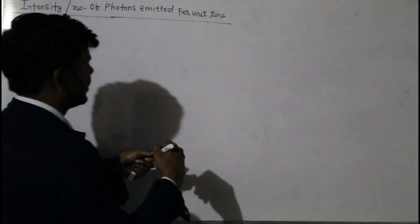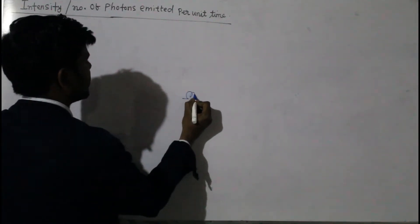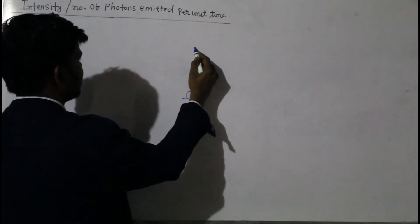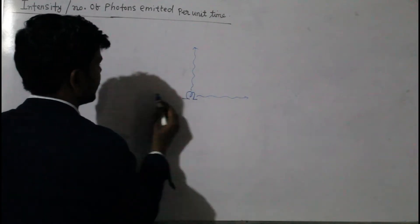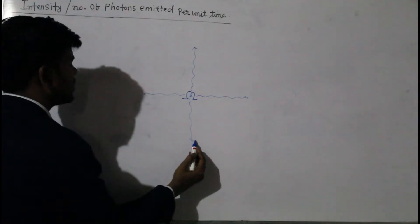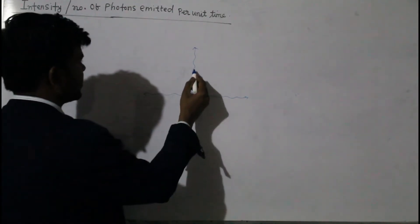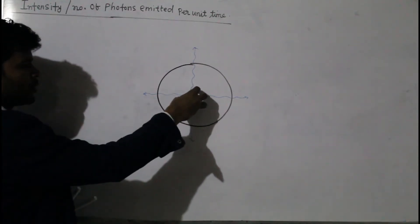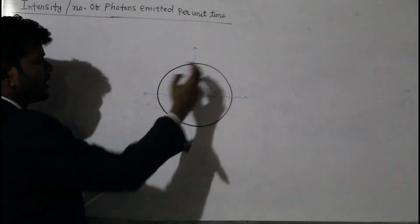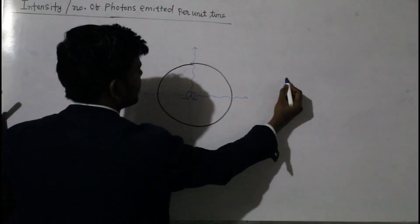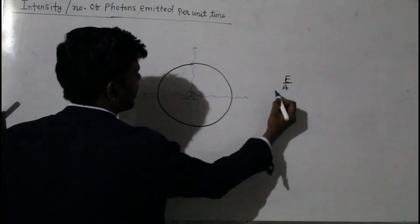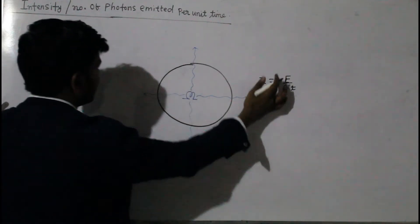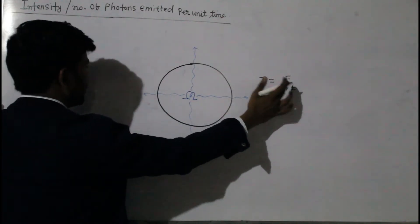Suppose we have a source of electromagnetic radiations emitting in all possible directions. We can construct one spherical surface around it. Electromagnetic radiations come out from this source and are incident on this spherical surface. Suppose the total energy incident on this surface is E, the total surface area is A, and the total time for which the energy is incident is T. Then the intensity I is defined as E divided by A divided by T — that is, energy incident on the surface per unit area per unit time normal to the surface.